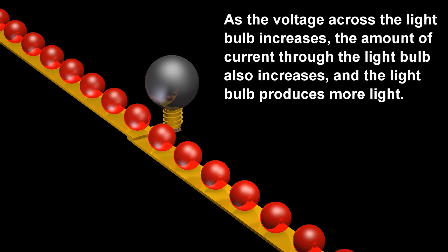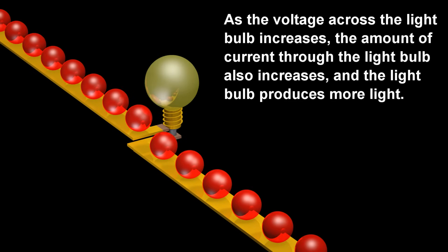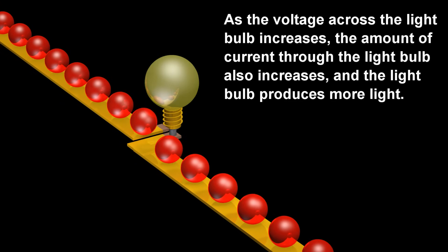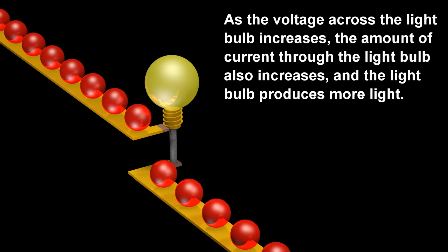As the voltage across the light bulb increases, the amount of current through the light bulb also increases, and the light bulb produces more light.